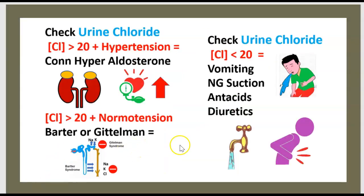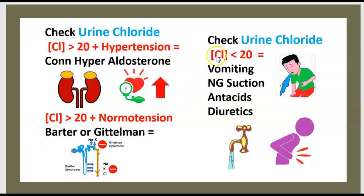To make the diagnosis of metabolic alkalosis, you have to check urine chloride. If urine chloride is over 20 plus hypertension, it's consistent with Conn syndrome or hyperaldosteronism. If chloride is over 20 but with normal blood pressure, it could be Bartter or Gitelman syndrome. If chloride is under 20, it could be vomiting, nasogastric suction, antacids, or diuretics.